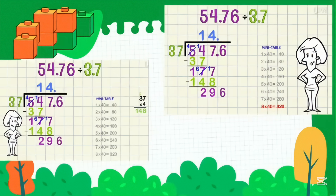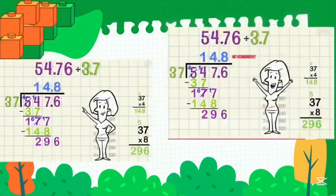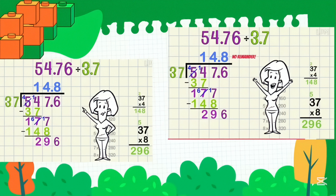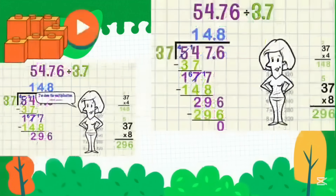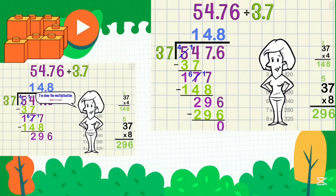Last step — bring down the 6. My final question is how many 37s are in 296? That's why I need the mini table: 8 times 40 is 320, a bit high, so I am going with 8. Let's multiply 37 times 8: the answer is 296. Perfect — this is an exact fit. Put the 8 on the answer line. Because this is an exact fit we know there is no remainder. I am happy with this because the multiplication gives no remainder, but you can show the working all the way down to zero with extra lines.